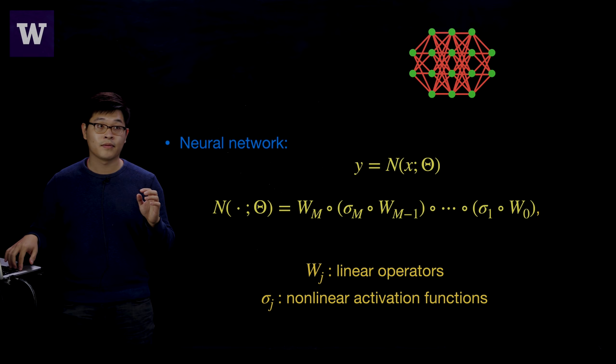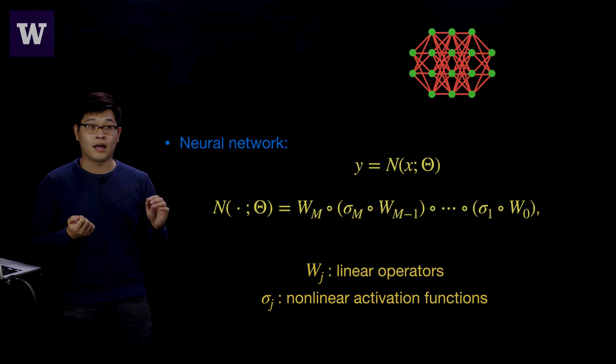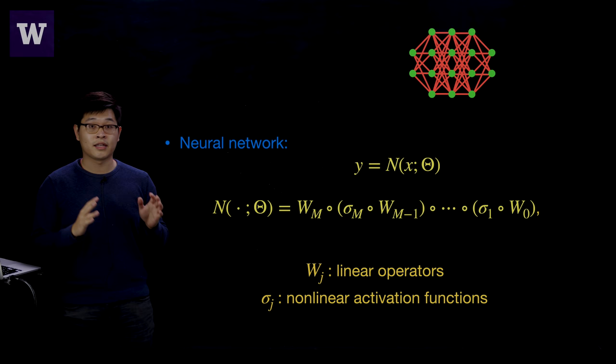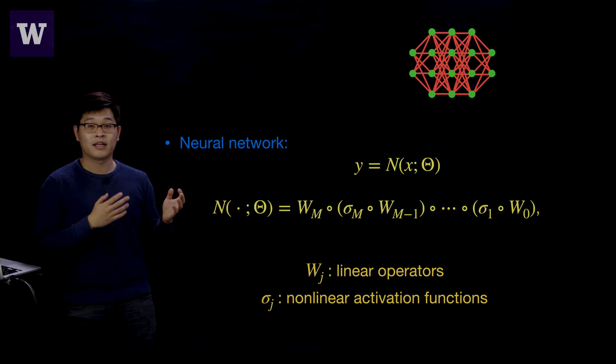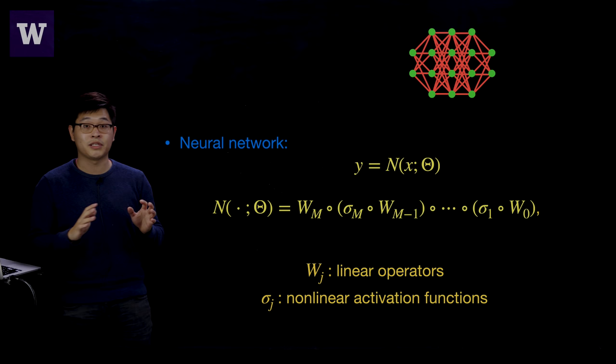In our work, there are many methodologies for data-driven modeling of dynamical systems — for example, methods based on sparse regression or symbolic regression. But for this work, we focus on using artificial neural networks to model the dynamics. One key advantage of using neural networks is that you can deal with experimental data directly without computing any numerical time derivatives, making it quite robust with respect to the data.